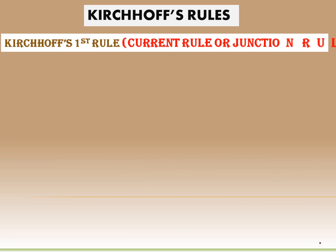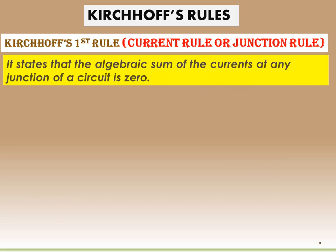Let's start with Kirchhoff's first rule, which is the current rule or junction rule. This rule states that the algebraic sum of the currents at any junction of a circuit is zero.